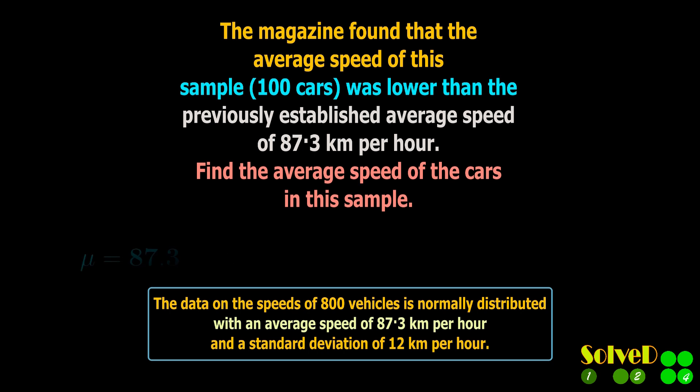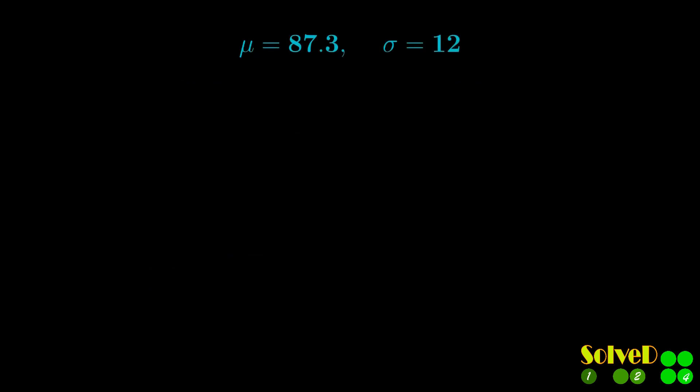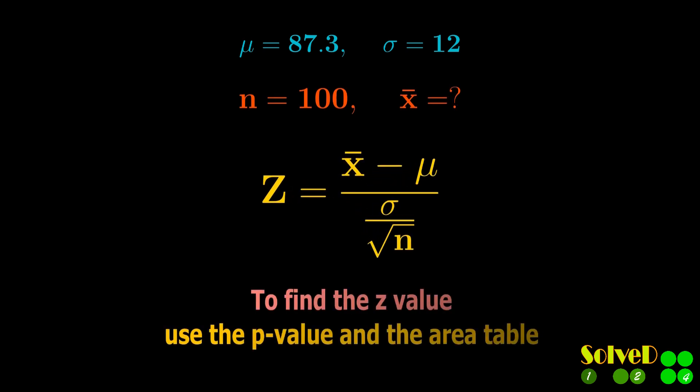The population mean and the population standard deviation are also given. Number of samples is 100, and x-bar is the required average value of the samples. Use this equation to find the x-bar. First find the value of z.